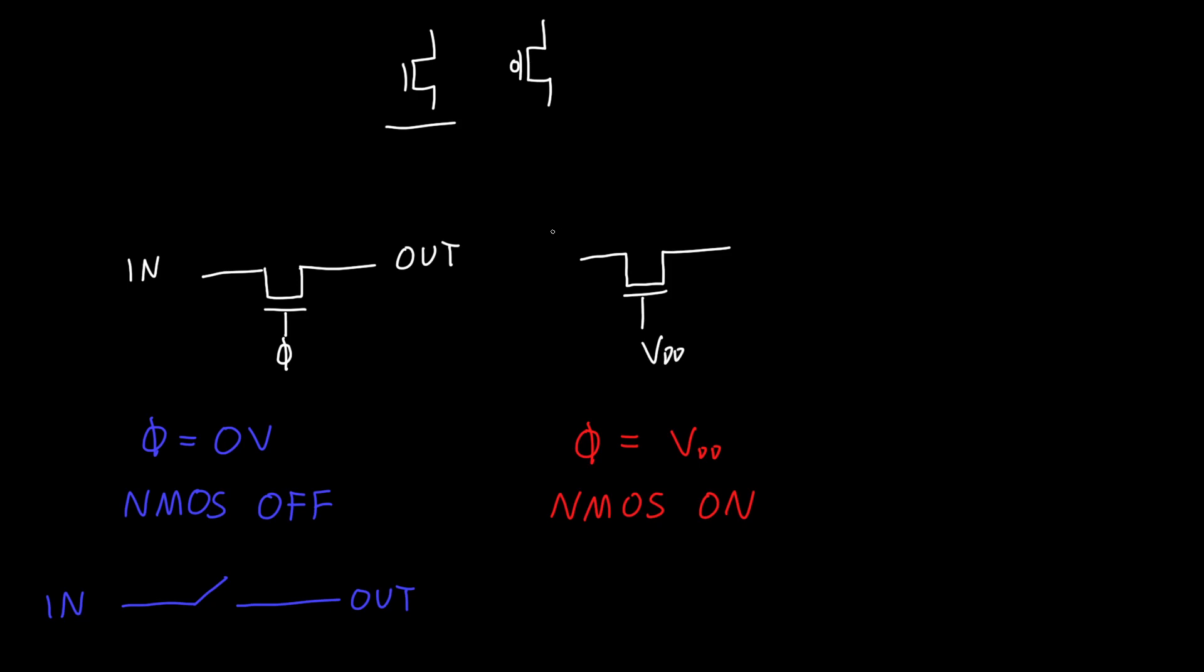Our NMOS should be on, but there's a problem. Because if our signal is, if our input is zero volts, then there's no problem. The output is also zero volts.